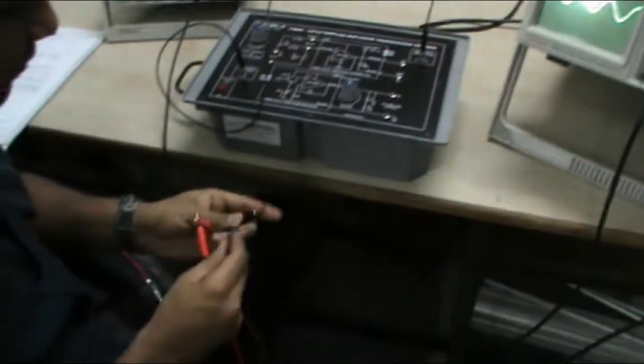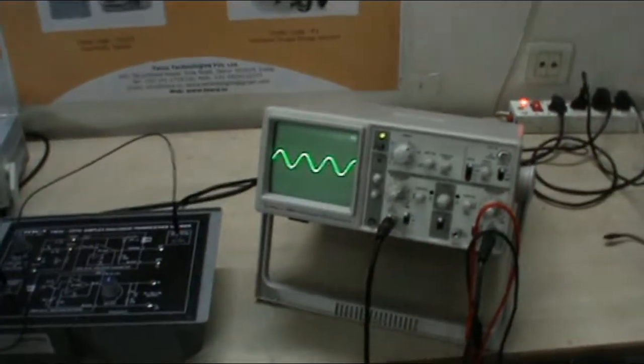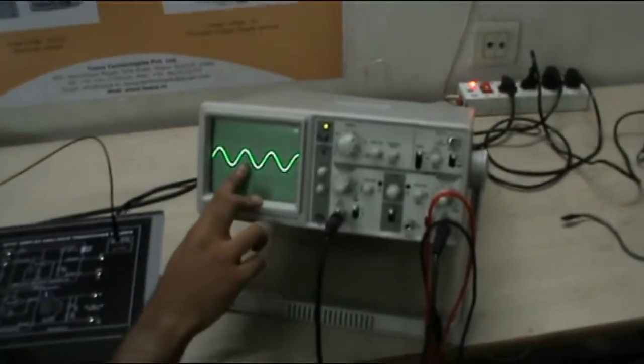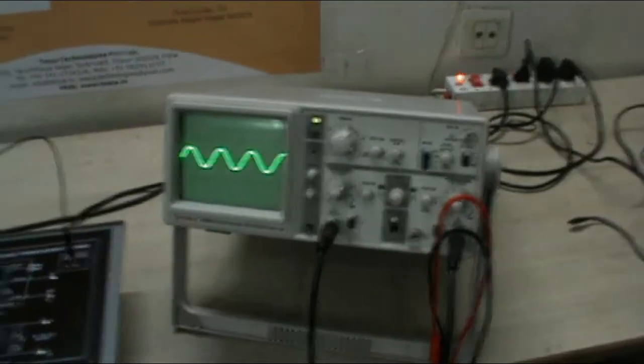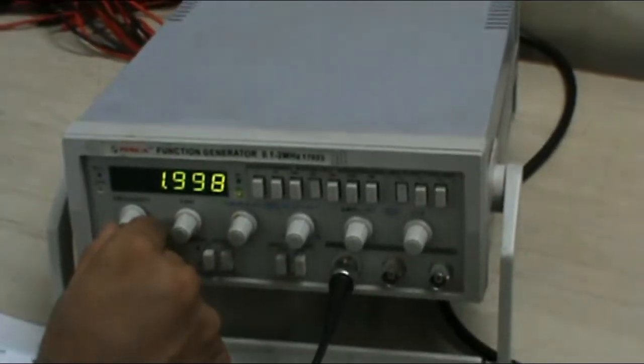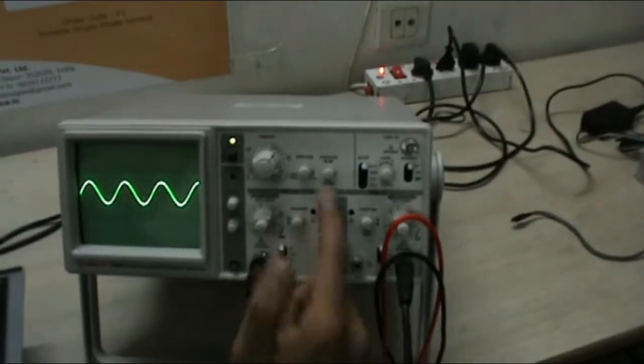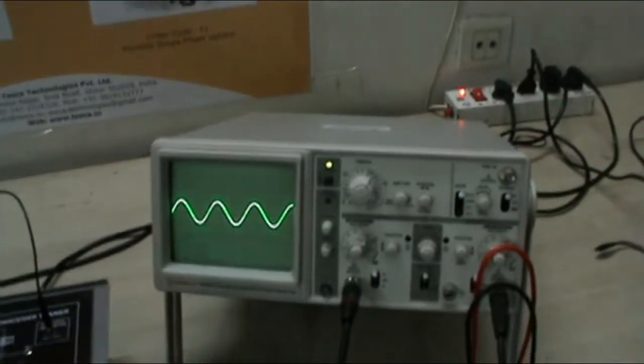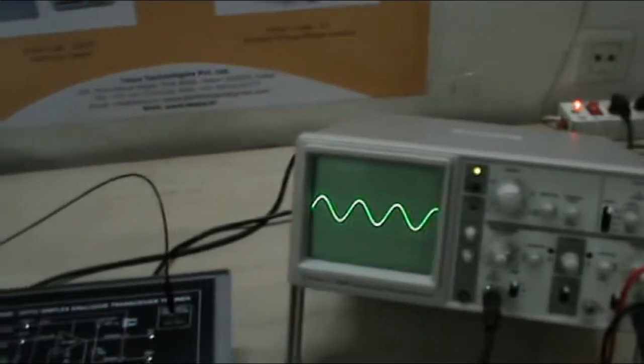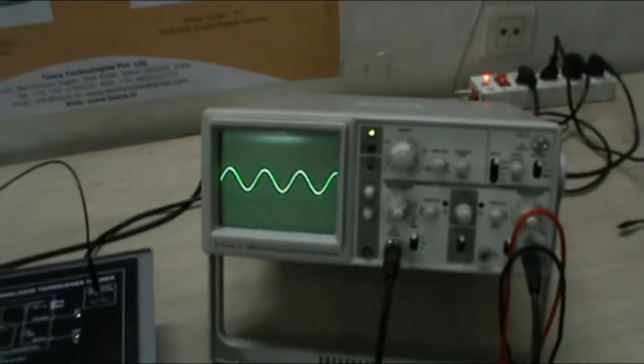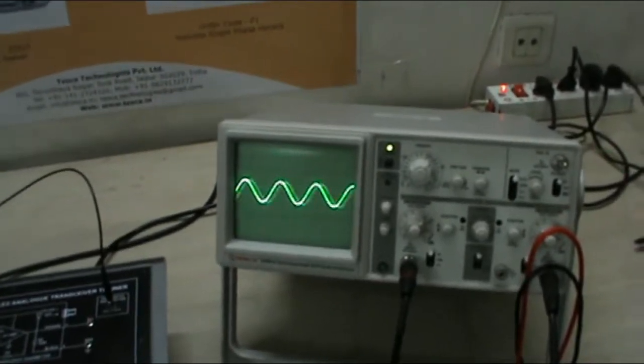Now I connect my CRO cable to the channel 1 of CRO and see the output waveform. Now this is my output waveform which is at 2 kHz and 100 mV peak to peak. As I have set it over here 2 kHz. This is 2 kHz sine wave and I have set it to 50mV per division so it is 100mV peak to peak and 2kHz.